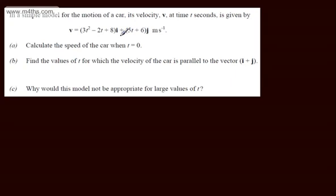In part A, we're asked to calculate the speed of the car when t equals zero. Speed is a scalar quantity. It's the magnitude of velocity. Velocity is a vector quantity as it has both magnitude and direction. The speed has just got a magnitude.